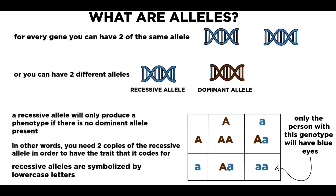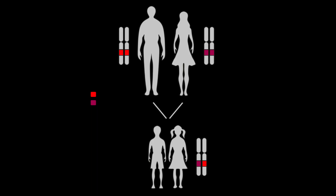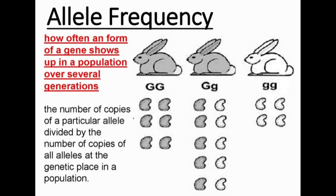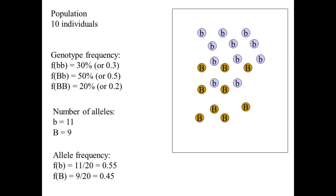All right, so what are alleles? Alleles are different versions of the same gene. Eye color can be blue, hazel, or brown — but it's just a different version of the same gene. Since humans have two sets of chromosomes, we get two copies of each gene — one allele from mom and one allele from dad. Allele frequency refers to how common a particular allele shows up within a population. So if there are 10 individuals, they collectively have 20 alleles within the population — two per each person.